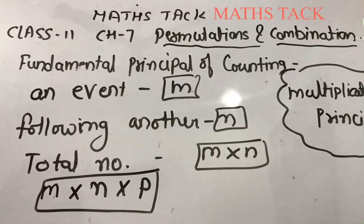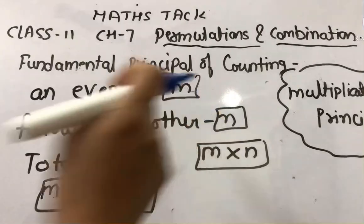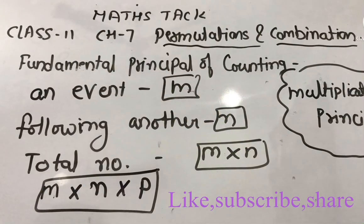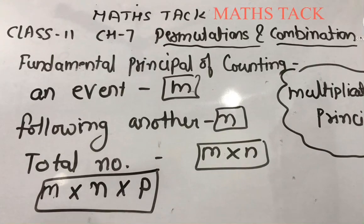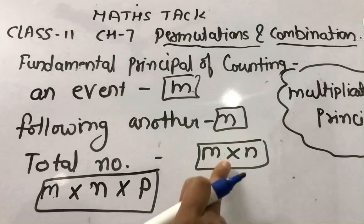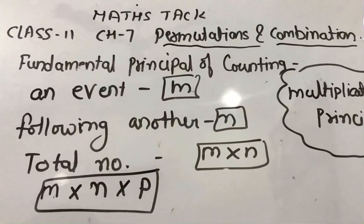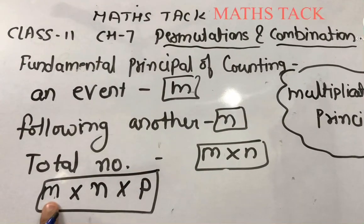Basically, what is the fundamental principle of counting? If an event can occur in m different ways, following which another event can occur in n different ways, then the total number of occurrences of the events in the given order is m×n. And if you have three events,